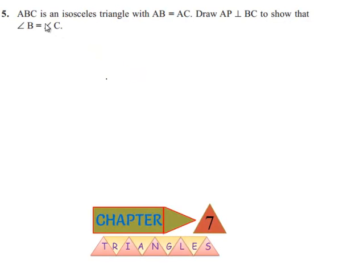In the fifth problem, ABC is an isosceles triangle with AB equal to AC. Draw AP perpendicular to BC to show that angle B is equal to angle C.